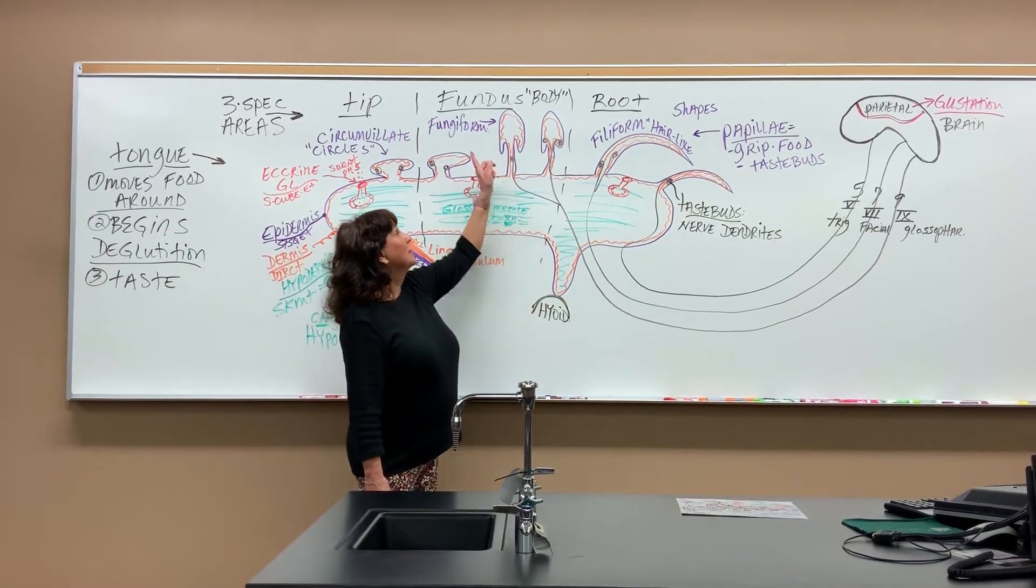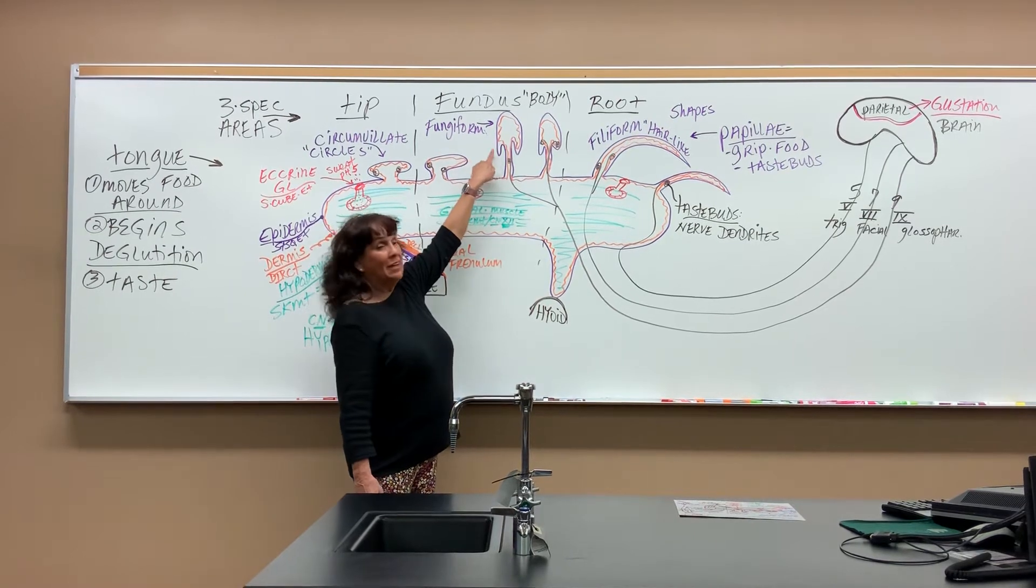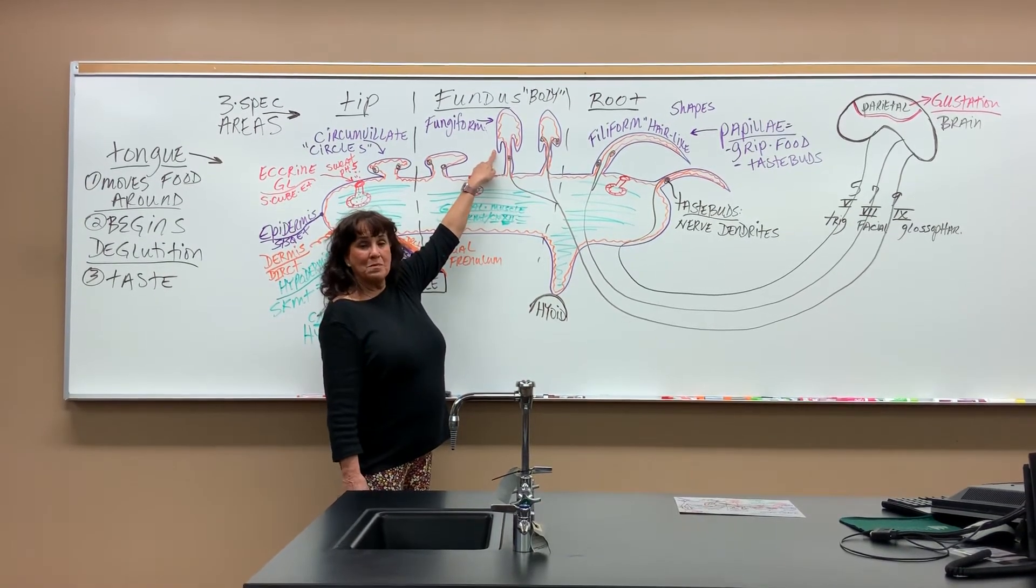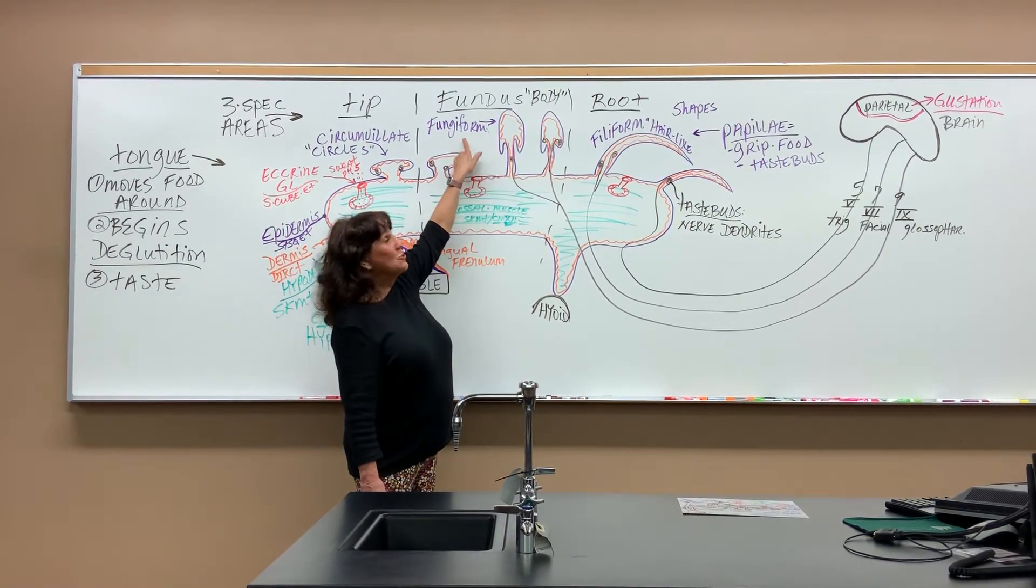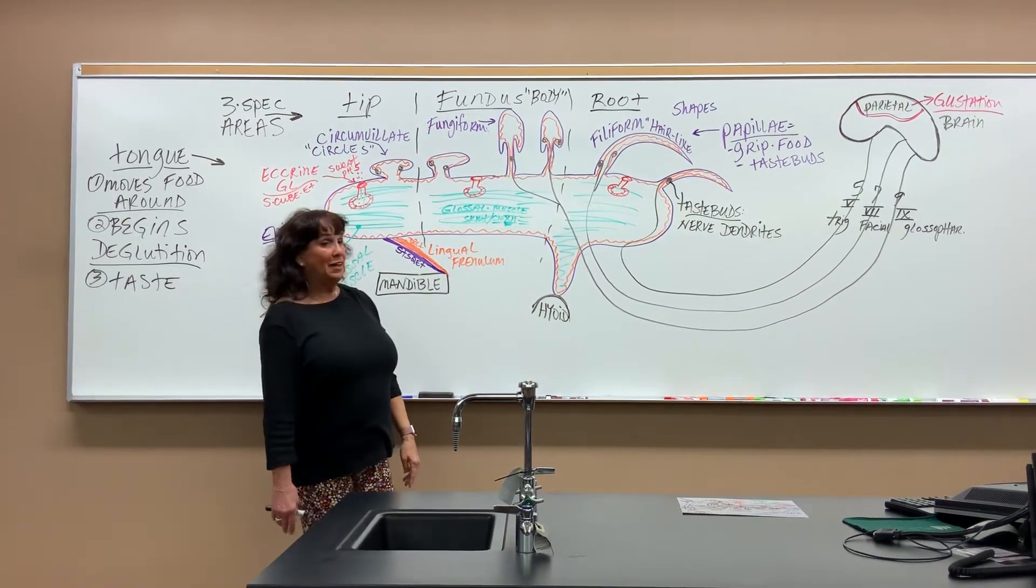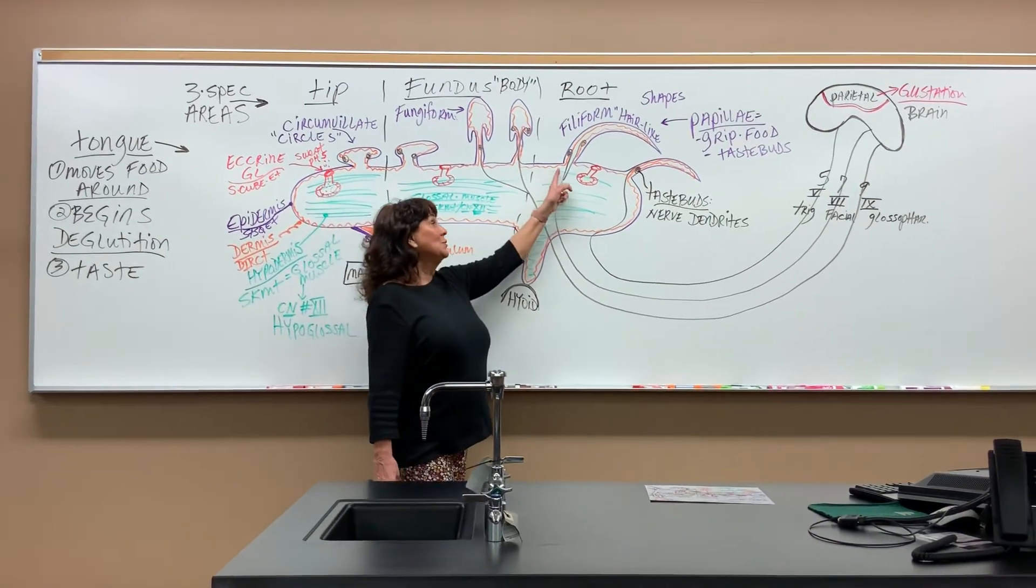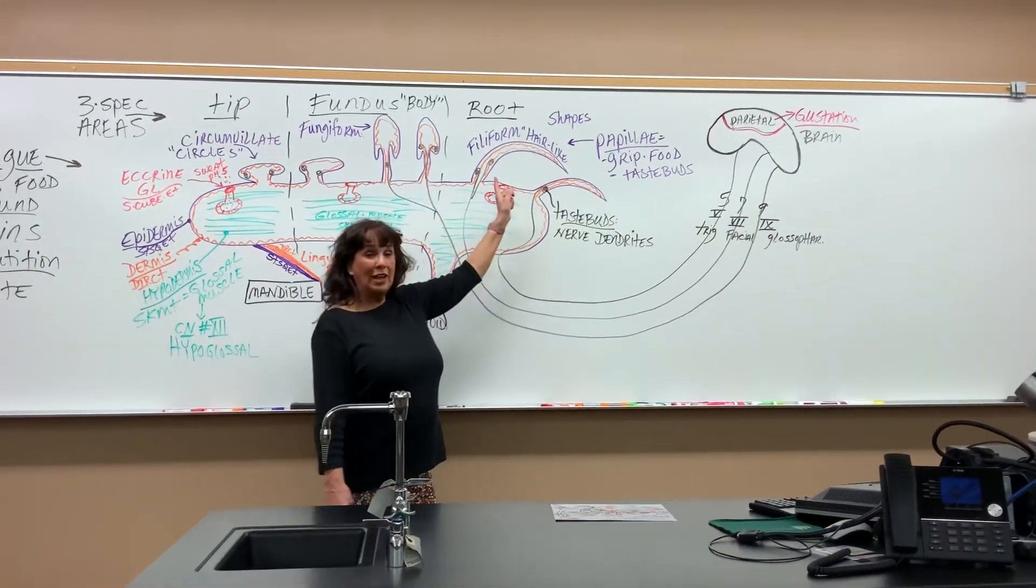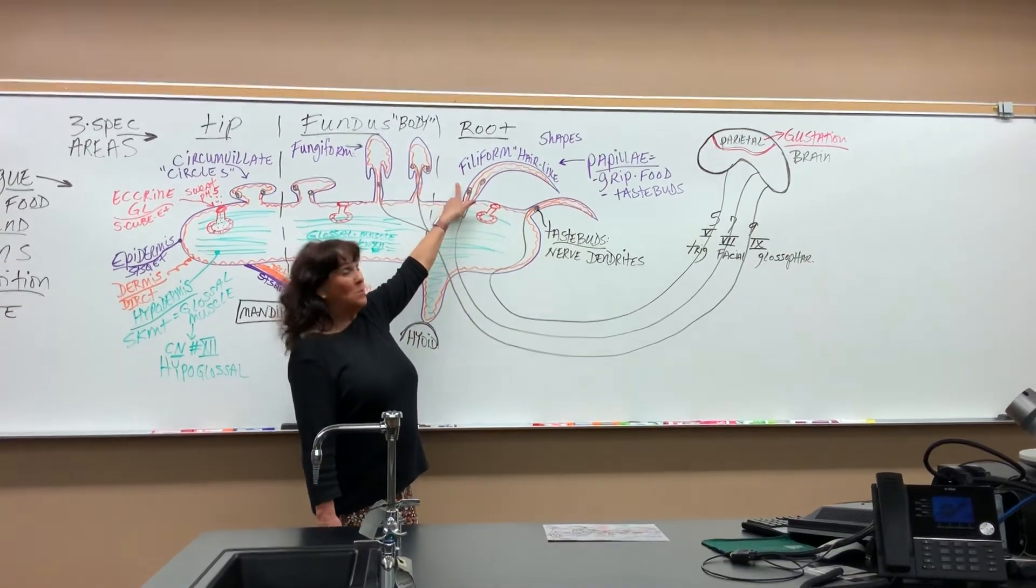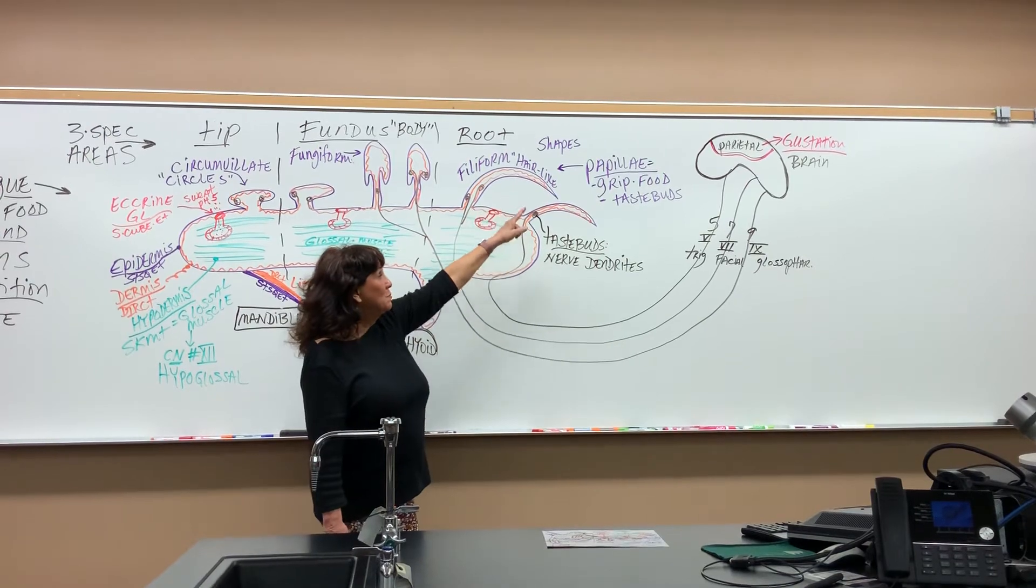In the middle part, the fundus, we have ones that almost look like morels or mushrooms, and those are called fungiform papillae, because somebody thought they looked like fungus. The last ones in the back are hair-like, and filiform always means hair-like. These are the filiform papillae.